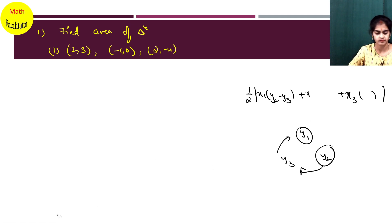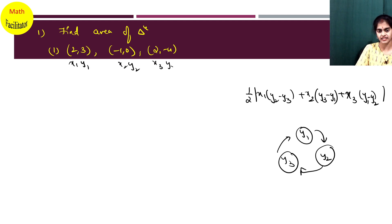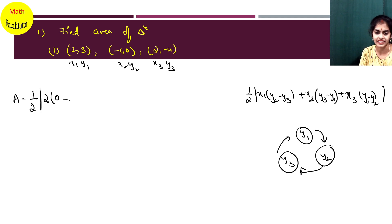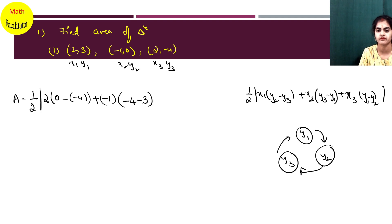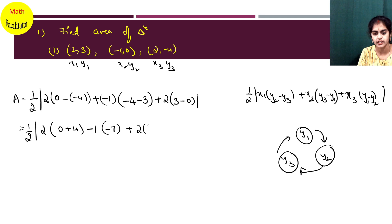Let me write it neatly. x1=2, y1=3; x2=-1, y2=0; x3=2, y3=-4. For x2, you write y3 minus y1. For x3, you remove y3, so what remains is y1 minus y2. Area equals half modulus of 2 into (0 minus (-4)) plus (-1) into (-4 minus 3) plus 2 into (3 minus 0). That is: 2 into (0 + 4) = 2 into 4 = 8; (-1) into (-7) = +7; 2 into 3 = 6.